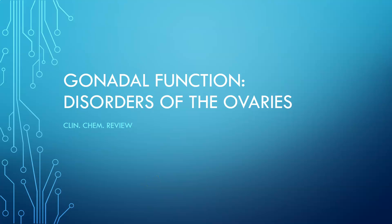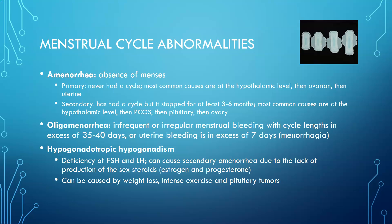This is Dr. A with a Clean Chem review video on gonadal function, looking at disorders of the ovaries. First, menstrual cycle abnormalities: amenorrhea is the absence of menses. Primary amenorrhea means the female has never had a cycle; most common causes are at the hypothalamus level, then ovarian, then uterine dysfunction. Secondary amenorrhea means a female has had a cycle but it stopped for at least three to six months; most common causes are hypothalamic, then PCOS, then pituitary, then ovarian.